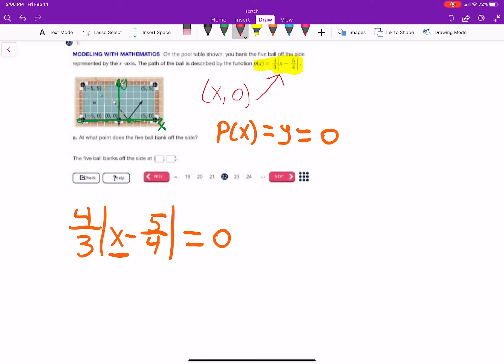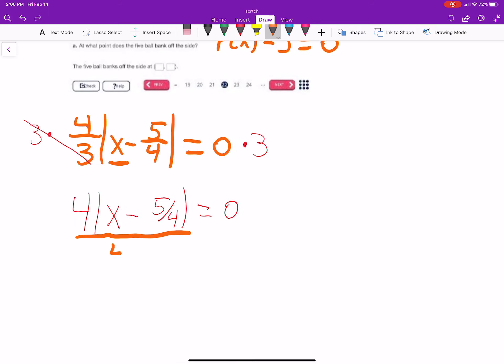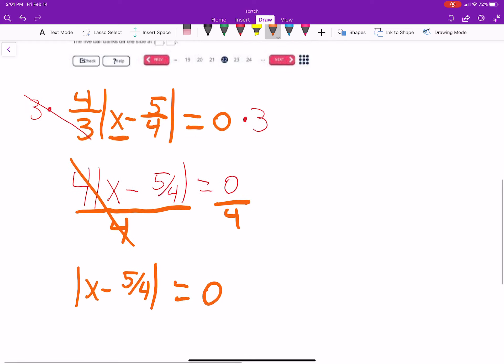So, we can multiply both sides by 3. Then you have 4, the absolute value of x minus 5-fourths. 0 times 3 is still 0. We can divide everything by 4. So, now we're left with the absolute value of x minus 5-fourths equals 0 over 4, which is just 0. Let's think about what statement makes this true.